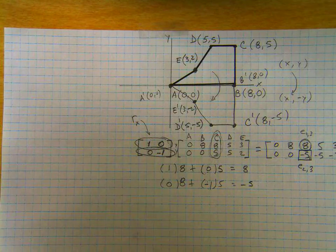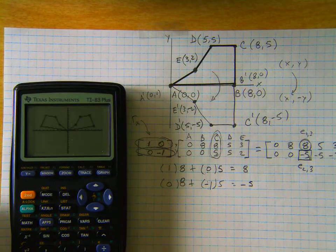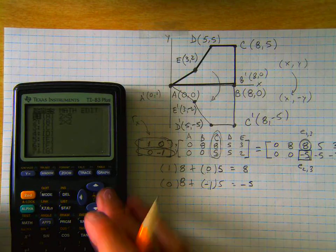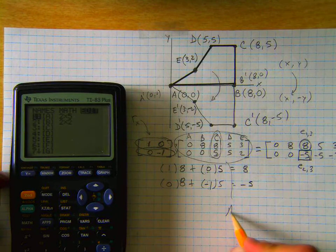All right, one more thing. If you have the program in your calculator called matplot, you can go into matrix and edit the 2 by 5 matrix. This original one, our pre-image, is going to be matrix A.